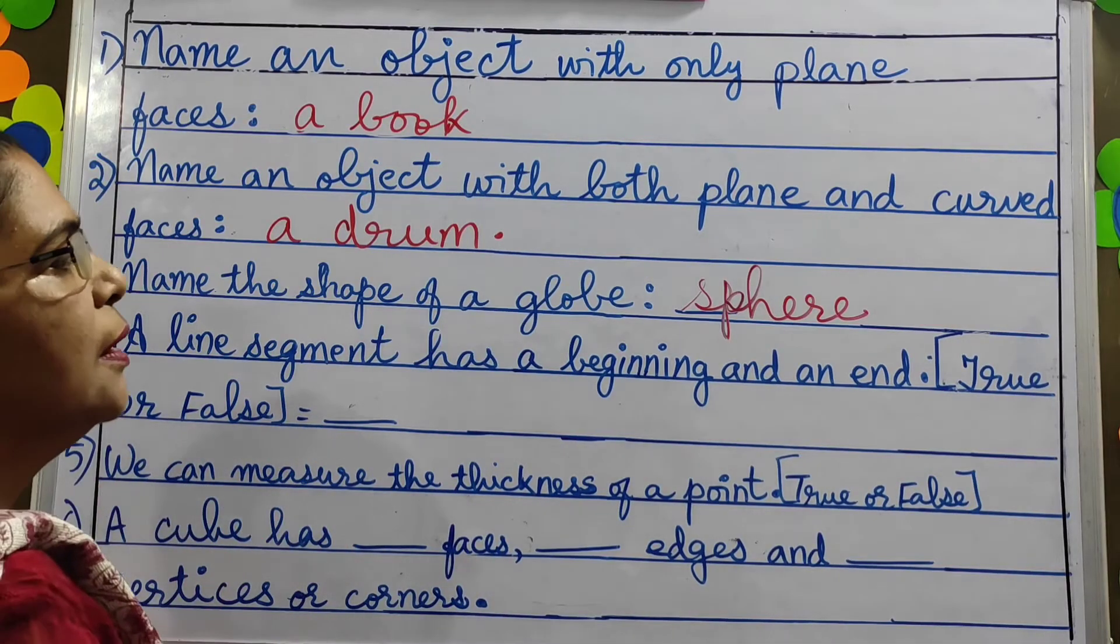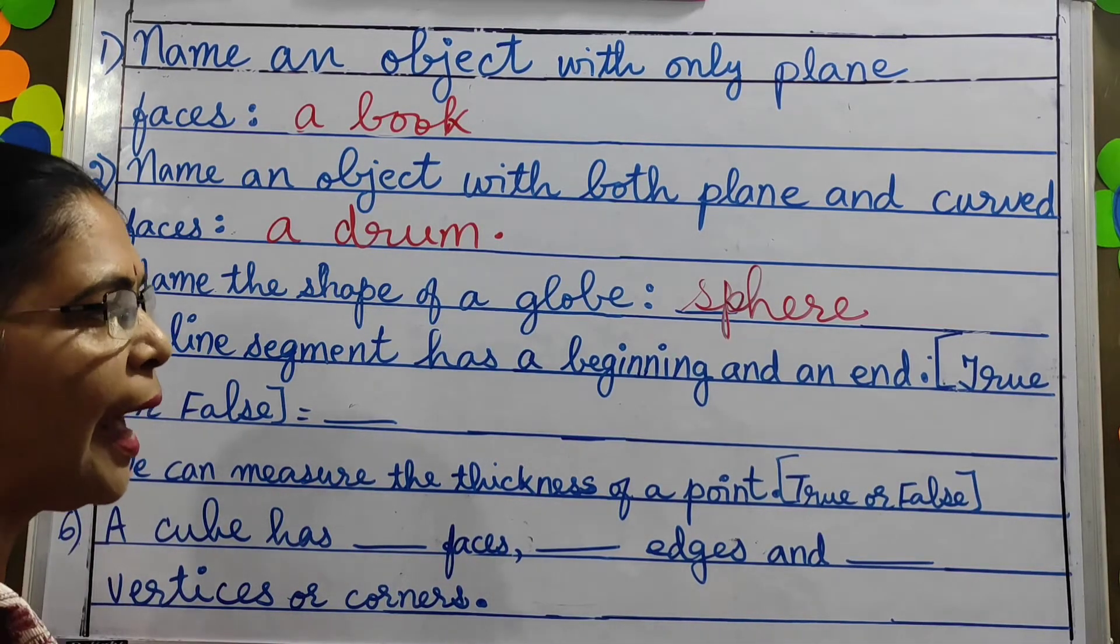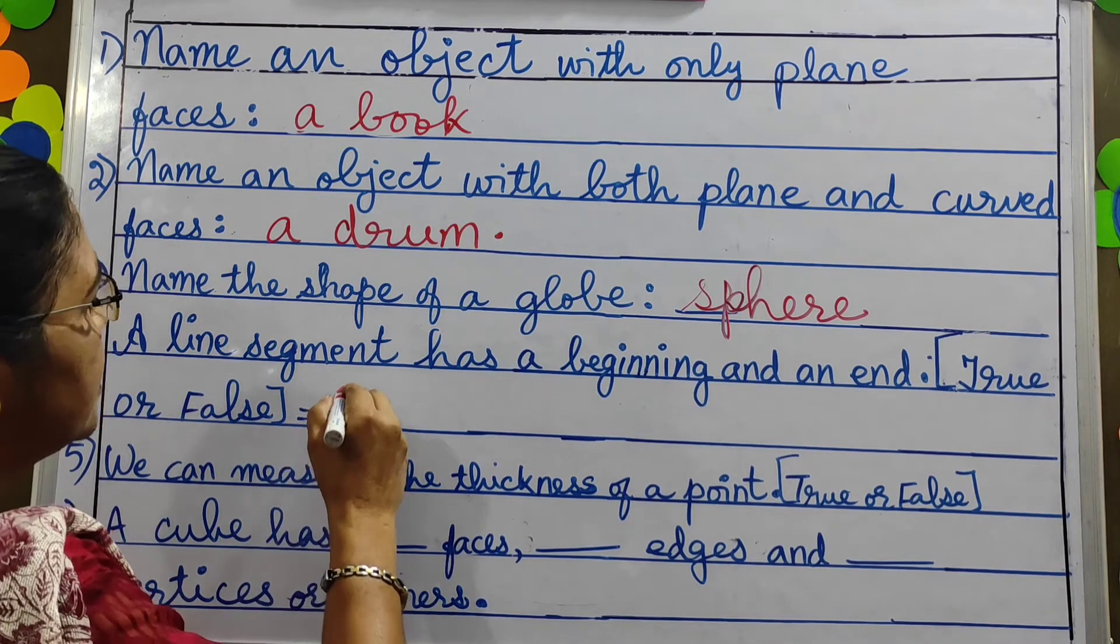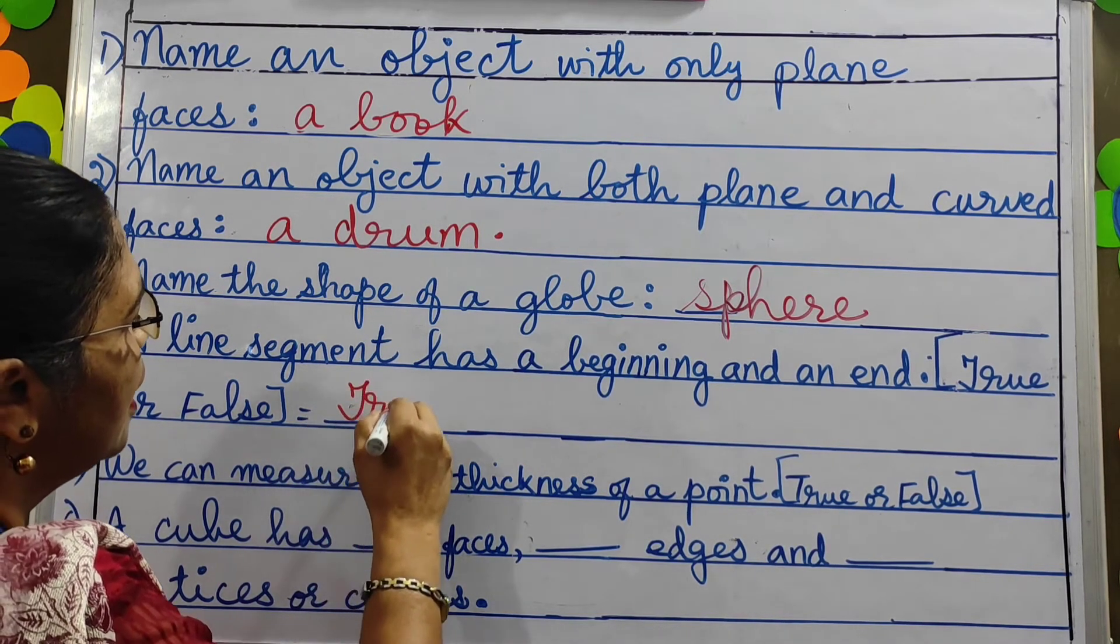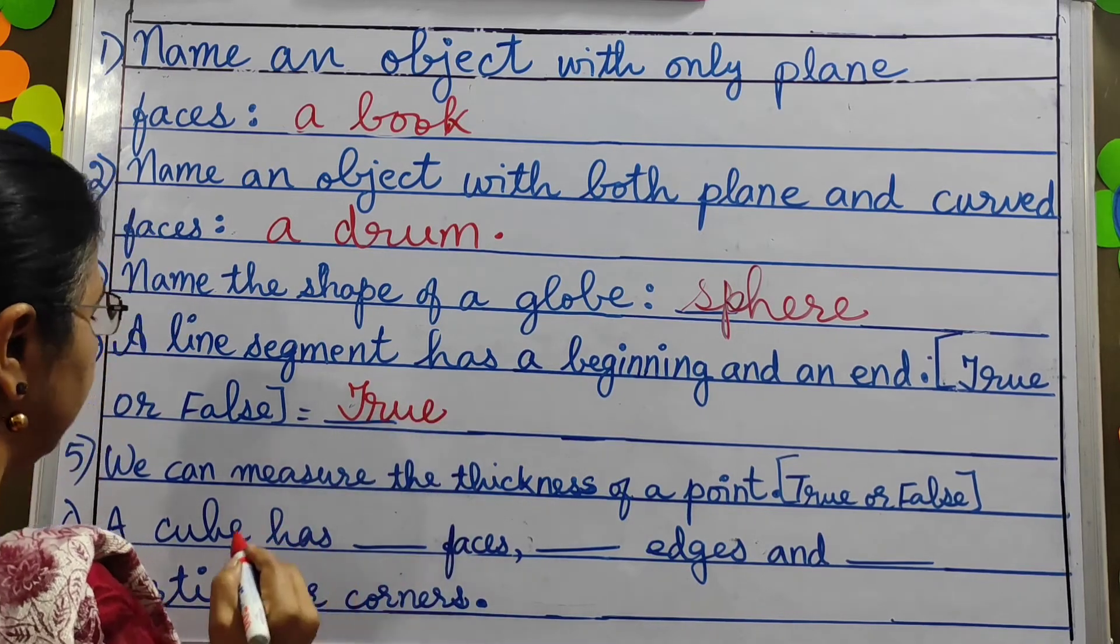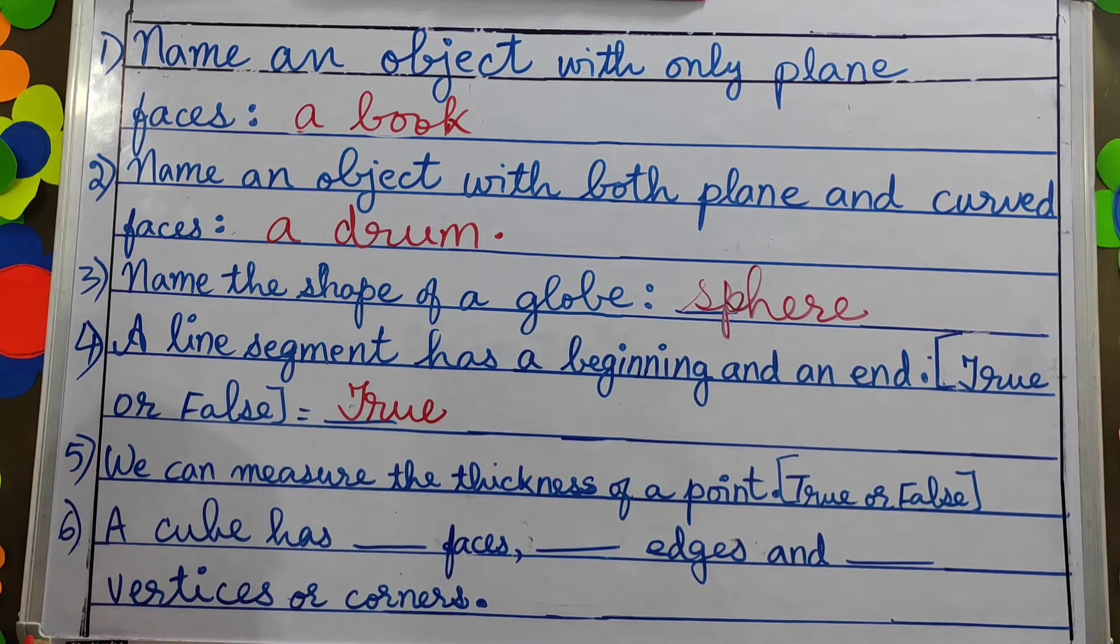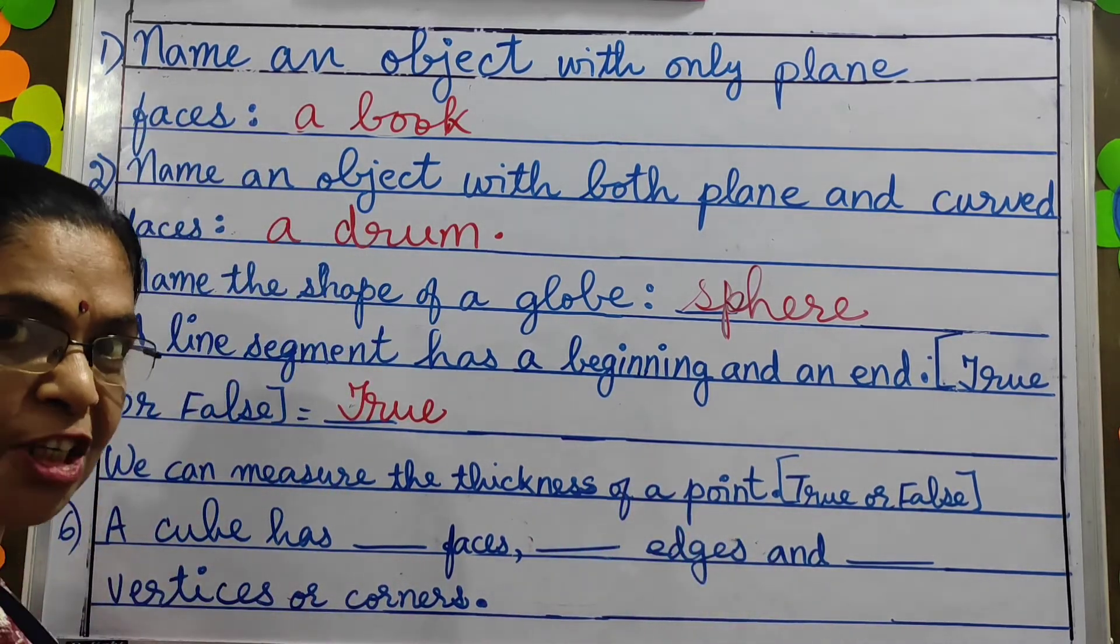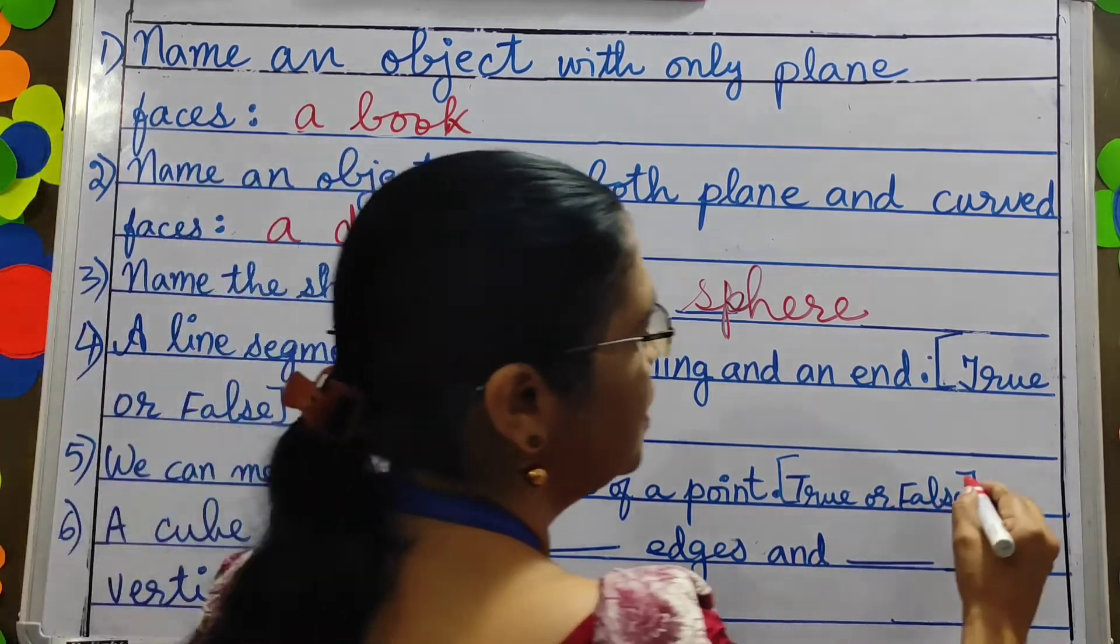A line segment has a beginning and an end. True or false? Yes a line segment has a beginning and an end. Number five, we can measure the thickness of a point. Can we measure children? No it's false.